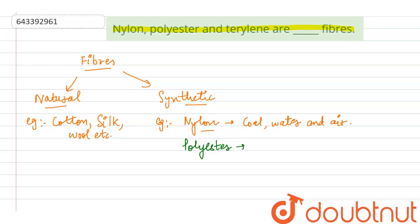The monomer is the ester, so ester is basically the repeating unit and it forms the polyester fiber. Terylene is the most common polyester.